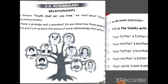The next topic is vocabulary. In today's vocabulary we will learn about relationships. In our family we have so many relationships. In the lesson 'Truth Shall Set You Free' we read about Johnny, Johnny's grandpa and grandma — these are relationships. Grandma and grandpa are our relatives. Do you have a grandpa and grandma? Do you know how these people are related to you?